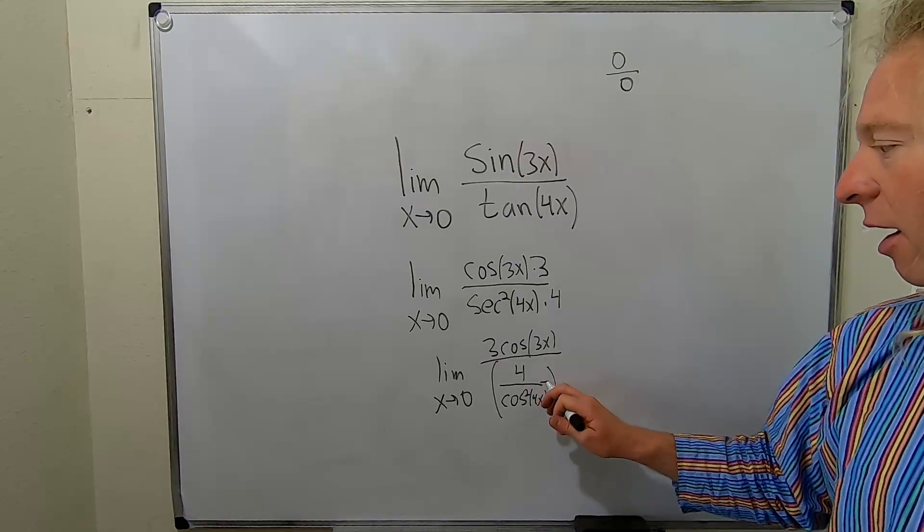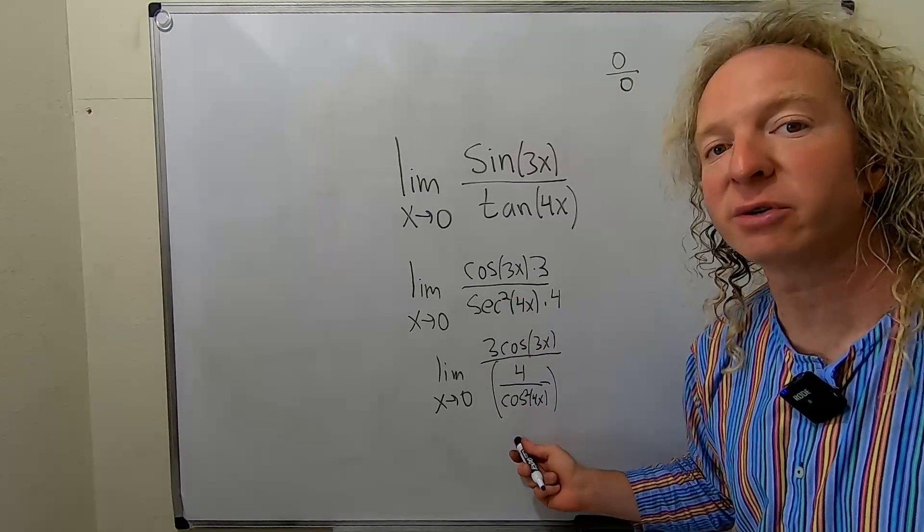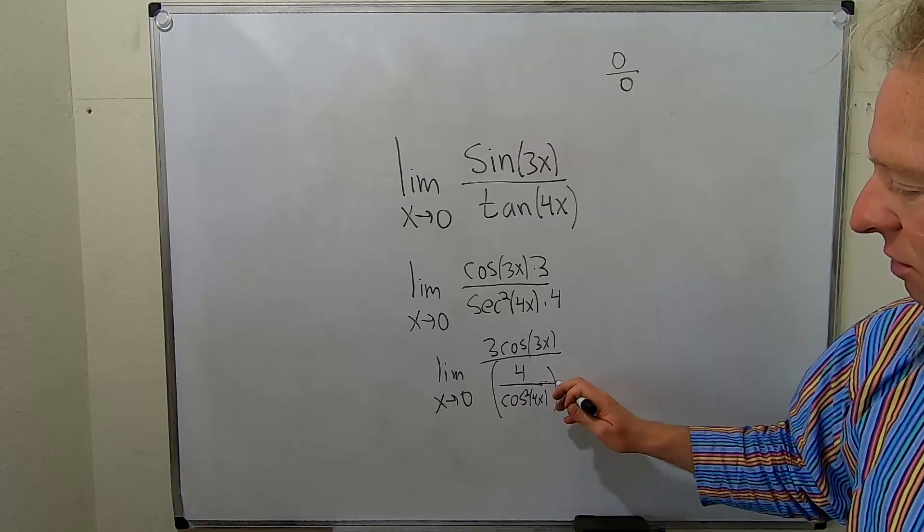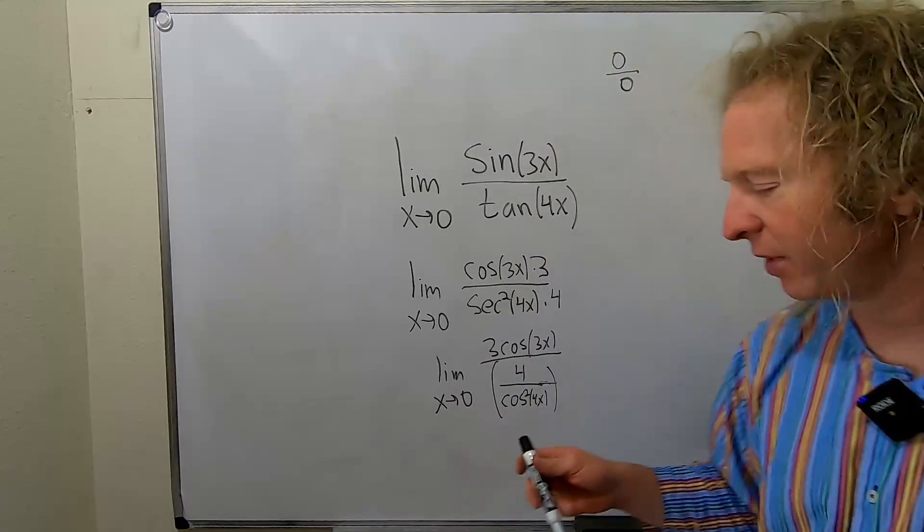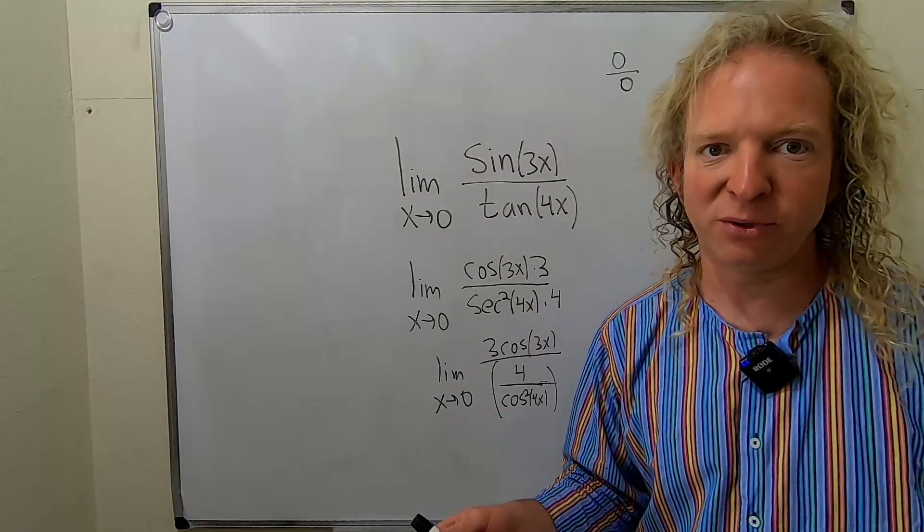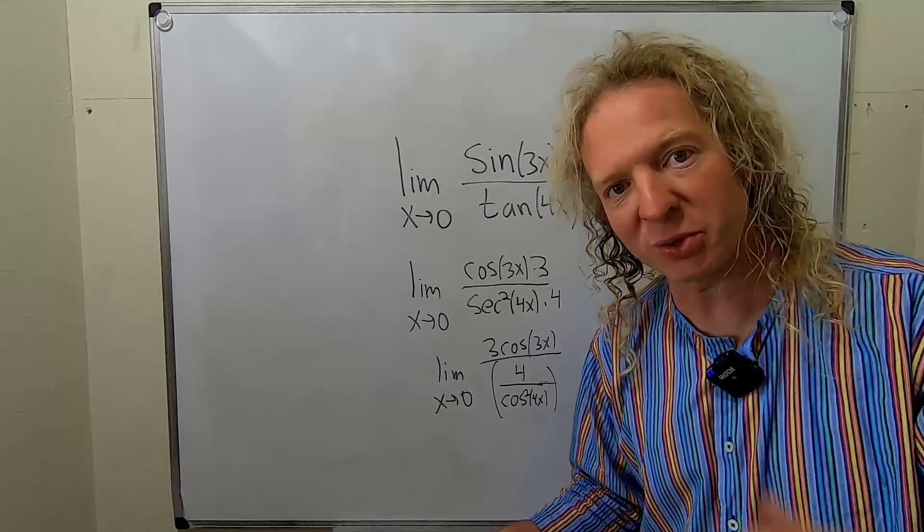Let's say, whoa, what happened? Secant squared is 1 over cosine squared. And I did this because you might not know what happens when you compute the secant of 0. But you probably know what happens when you compute the cosine of 0. Cosine of 0 is 1.